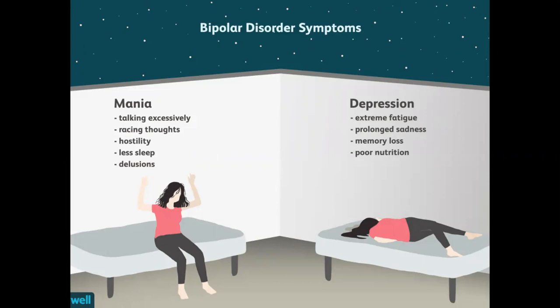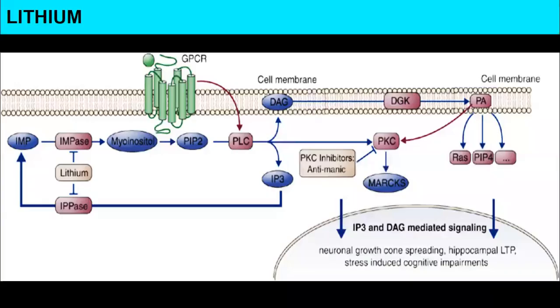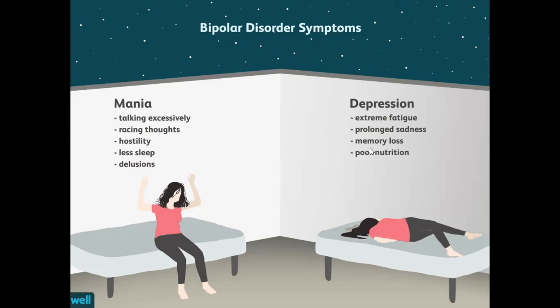Bipolar disorder is actually a genetic condition as well — it runs in the family. Now, how exactly are we going to treat the manic phase? We have already talked about antidepressants; now we'll talk about how to treat mania.